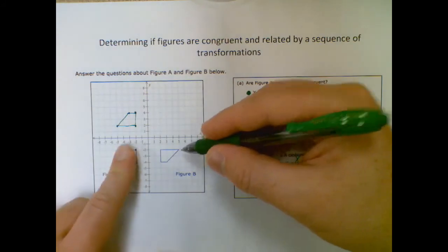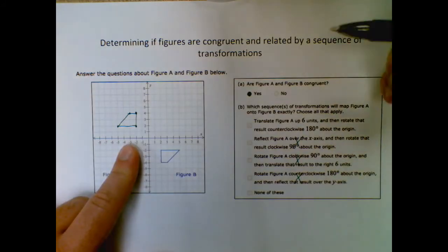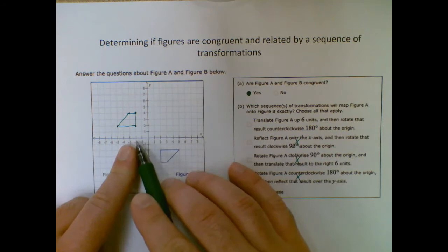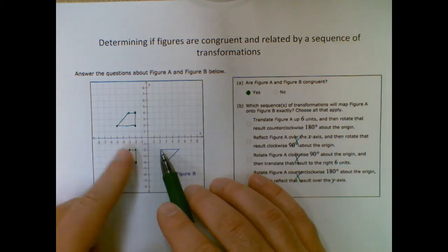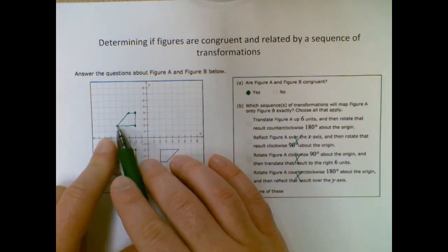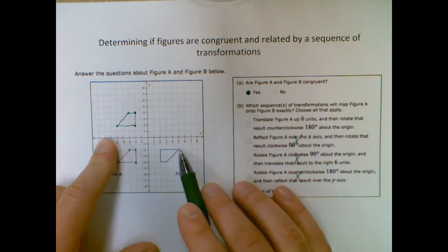Then rotating these 180 degrees, remember you're going to have the same coordinates just with opposite signs. So if this one's negative two, two, then I want it to be at two negative two, which I have. This is negative five, two. So I want it to be at five negative two. Okay, good.